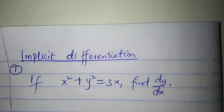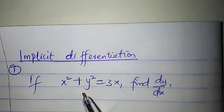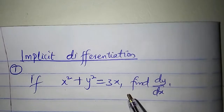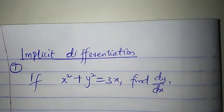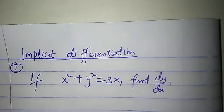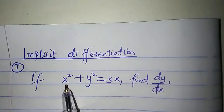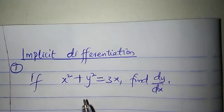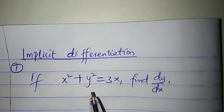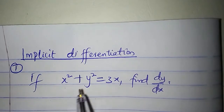The first question: if x squared plus y squared is equal to 3x, find dy/dx. In this function, we have x squared plus y squared equal to 3x. y is not made the subject of the formula — both x and y are mixed up in the equation.